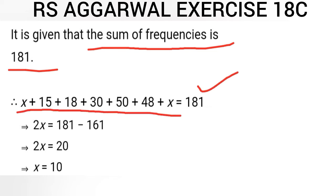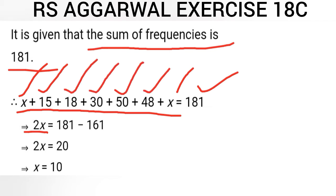x plus x will give us 2x. When we add 15 + 18 + 30 + 50 + 48 we get 161. So 2x + 161 = 181, which gives us 2x = 20, and therefore the value of x is 10.